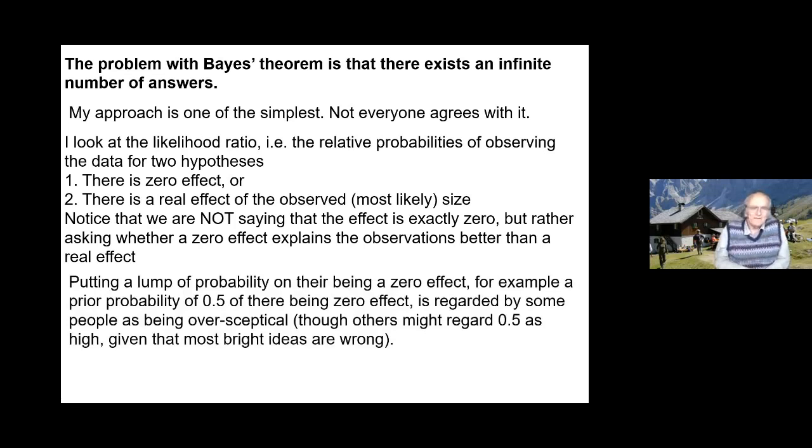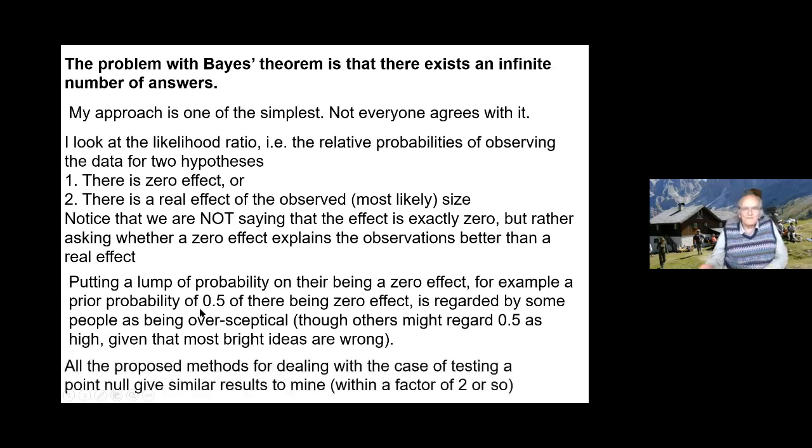Now this amounts to putting a lump of probability on there being a zero effect. If you put a prior probability of 0.5 of there being a zero effect, in other words the prior odds are 1, that's regarded by some people as being over-skeptical, though others might regard a 50/50 chance of the hypothesis being correct as high, given that most bright ideas turn out to be wrong.